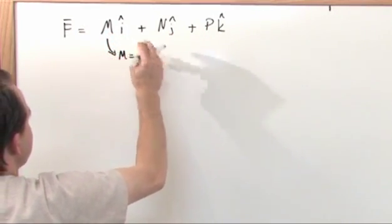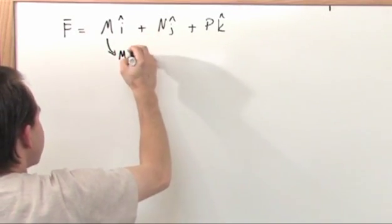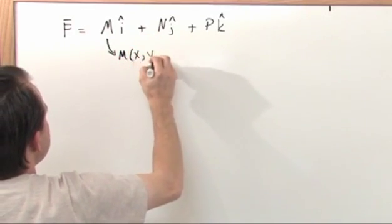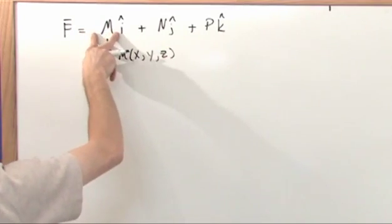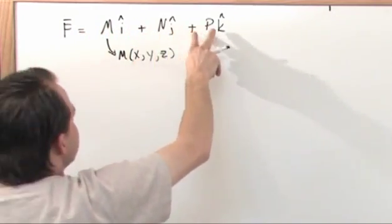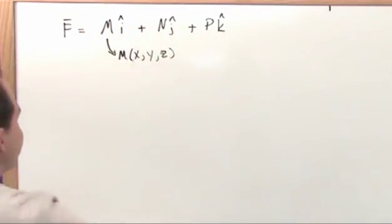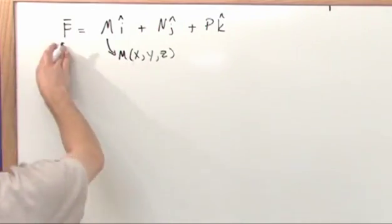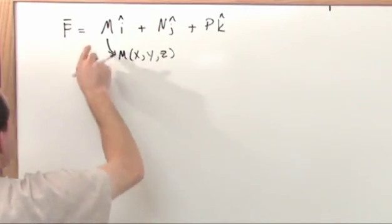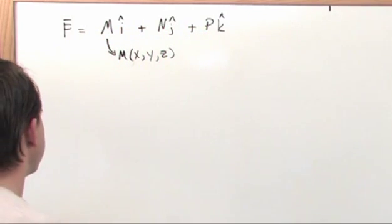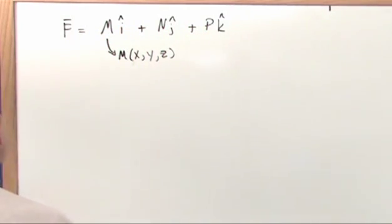But don't forget that M is just a function of X, Y, and Z. So there's a function of X, Y, and Z here, a different function of X, Y, and Z here, and a different function of X, Y, and Z here. That's your vector field. So this is what we've been writing as a vector field all along. I'm just using some abbreviations to help you out, and I think you'll see why we do that here in a second.